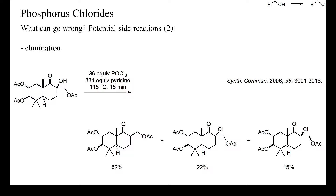Mixtures of pyridine with phosphorus oxychloride are often used to bring about the elimination of hydroxyl groups. In this example, both elimination and deoxychlorination of a tertiary alpha-hydroxy ketone occurred, because the elimination of water from alpha-hydroxy ketones or esters is notoriously difficult. But with other alcohols, elimination may sometimes become the main reaction pathway.